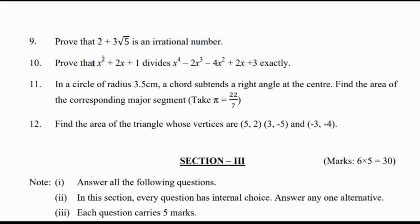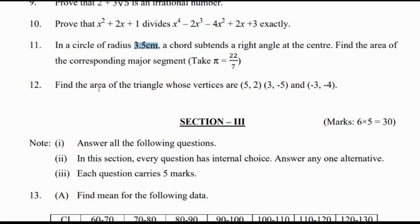Question 10: Prove that (x² + 2x + 1) divides x⁴ − 2x³ − 4x² + 2x + 3. This is a question from polynomials where we have to divide the two expressions. Question 11: In a circle of radius 3.5 cm, a chord subtends a right angle at the center — find the area of the corresponding major segment. This is from areas related to circles. Question 12: Find the area of the triangle whose vertices are (5, 2), (3, −5), and (−3, −4), using the coordinate geometry formula.